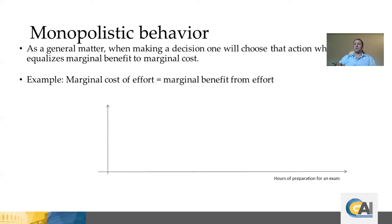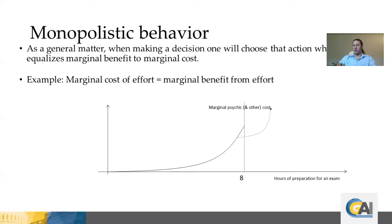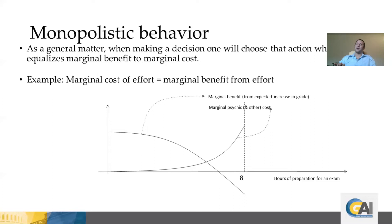There is an upward sloping curve illustrating the marginal psychic and other costs of studying as a function of time spent. At eight hours, suppose the student can no longer study because they are exhausted — up to that point, marginal cost of studying is increasing. There is also a downward sloping curve illustrating the marginal benefit from studying in the form of an expected increase in grade. After studying for six hours, the marginal benefit becomes negative, meaning the person's performance actually worsens.